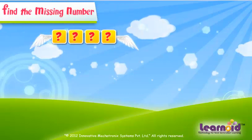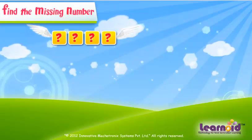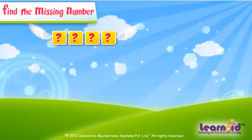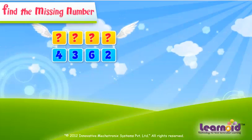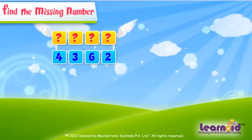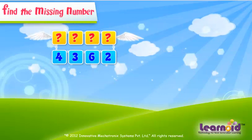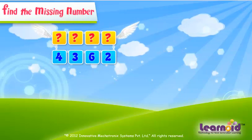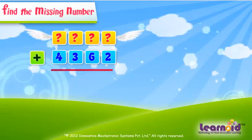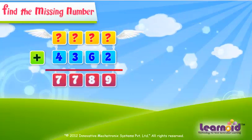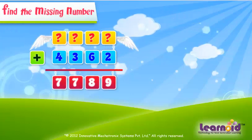The first number is missing. The second number is 4362, and the sum of the two numbers is 7789.